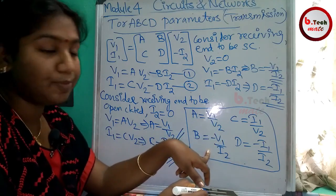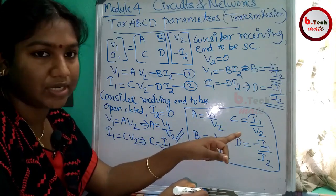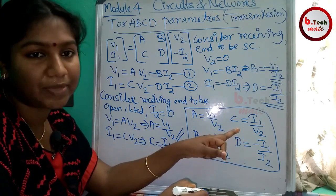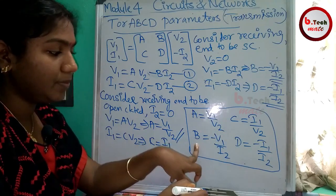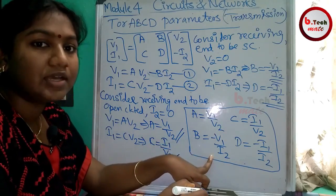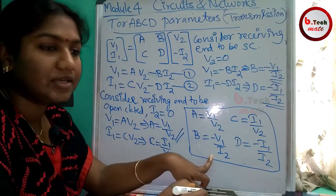Now C, B equals C, I1 by V2. That is, short circuit parameter. Then, the unit is the ohm unit. The B is the value of V by I. The same unit is the value of ohm.